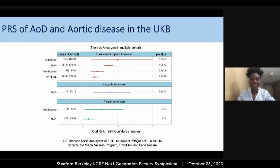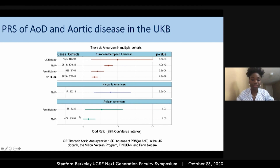This PRS was then used to test the association with thoracic aortic aneurysm in multiple cohorts and ancestry groups, including the multi-ethnic cohort of the Million Veteran Program, Penn Biobank, and FinnGen. What we see is that one standard deviation increase in the polygenic risk score of aorta diameter was significantly associated with an increased risk of thoracic aortic aneurysm in all cohorts, and most especially in European, Hispanic, and African-American populations. However, as expected, we saw a reduction in the performance of the polygenic risk prediction for African-Americans, more specifically in the Million Veteran Program.